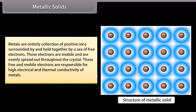Metals are orderly collection of positive ions surrounded by and held together by a sea of free electrons. These electrons are mobile and are evenly spread out throughout the crystal. These free and mobile electrons are responsible for high electrical and thermal conductivity of metals.